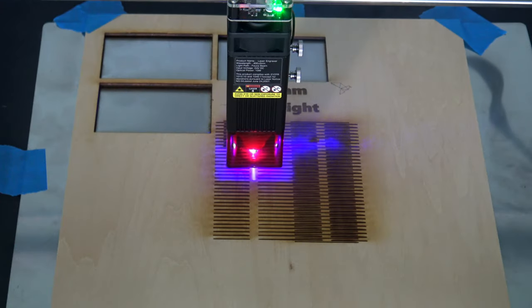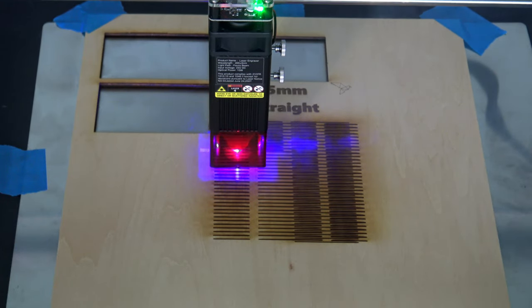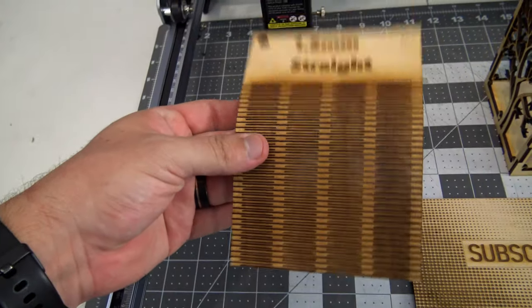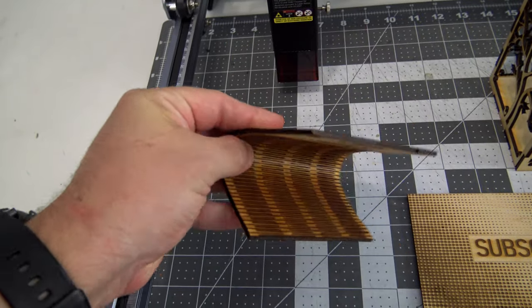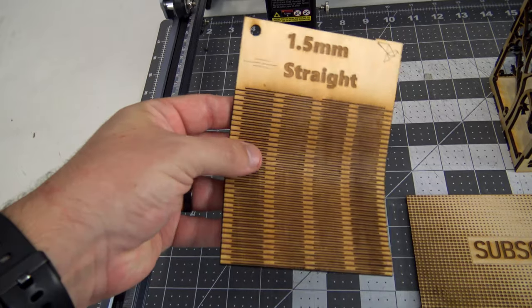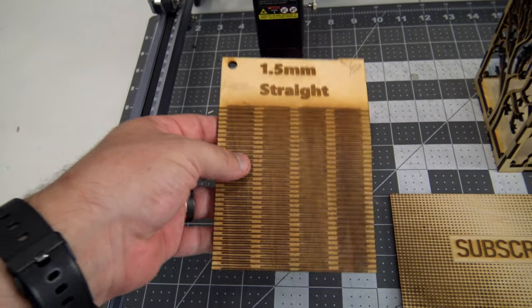This living hinge was cut at 350mm a minute, at 100% power, and it cut clean through. Only 1 or 2 spots didn't fully cut, but this is one of the best first results I've had with a living hinge.